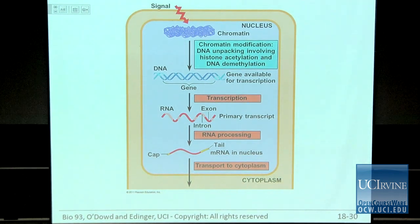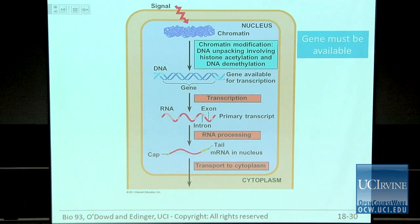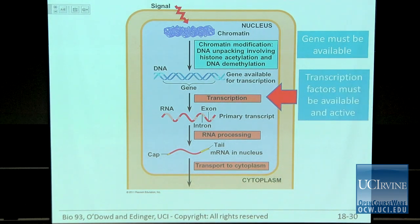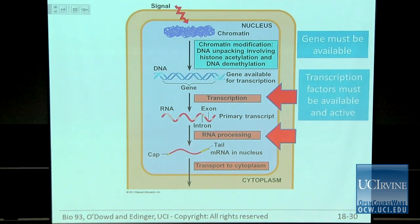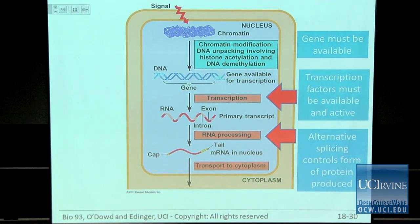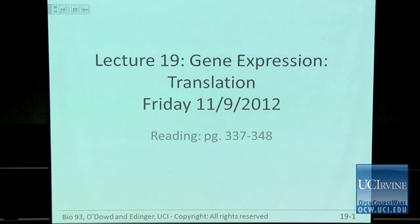This slide summarizes all the things we talked about in the nucleus that regulate gene expression. Chromatin states — the packing of DNA — will affect whether the transcriptional machinery can get access. There are specific and general transcription factors whose availability and activity regulate whether RNA polymerase II stays bound to a promoter. There are also many ways that RNAs are processed and their stability regulated, including alternative splicing, and the 5' cap and 3' tail are important for export to the cytoplasm. Today we're going to talk about translation — changing the language from nucleotide to amino acid.